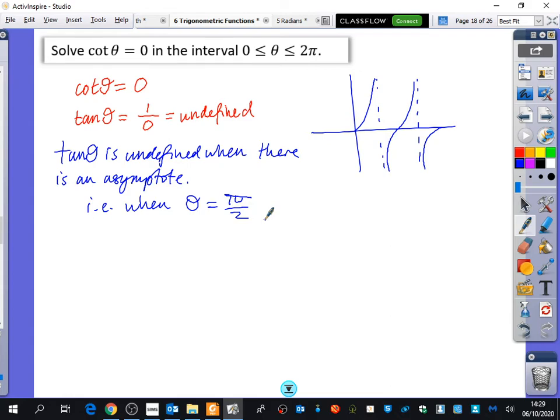So tan θ is undefined when there is an asymptote. I.e., when θ is equal to π over 2. That's the first one that there is an asymptote. And for tan θ, you are allowed to find the next solution by just adding on π. And you can keep adding on π because it's adding on 180. And when I add π to this, I get 3π over 2. And I don't need to do any more because if I added on π again, what would I get if I added on π again? 5 over 2 π, which is clearly going to be bigger than 2π because 5 over 2 is 2.5.